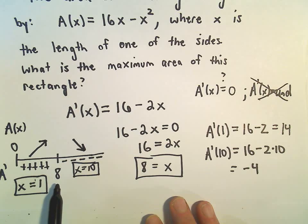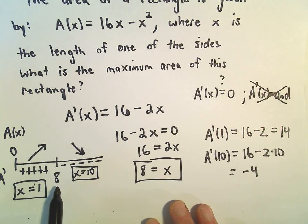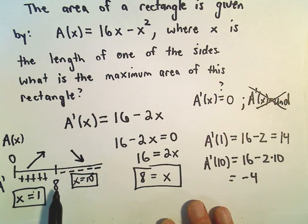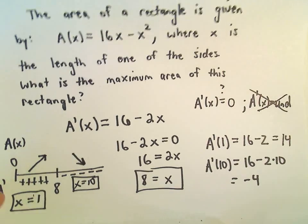So once the side length, once one of the side lengths goes beyond this value of 8, it says now the area is getting smaller, smaller, smaller.